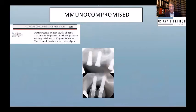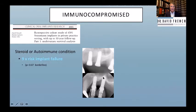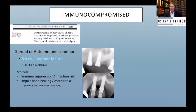Moving to immunocompromised status: we published a study on implant survival showing a nine-times risk of failure in patients on chronic steroids or with autoimmune conditions like autoimmune hepatitis or celiac disease — borderline significant due to small numbers. Here's an example: implants were perfectly healthy and then the patient developed a sudden autoimmune condition — their whole body crashes and so do the implants. Steroids cause immune suppression and also have an osteopenic effect on bone.